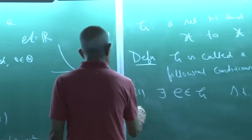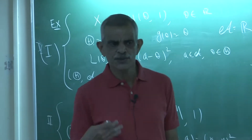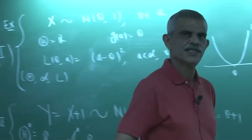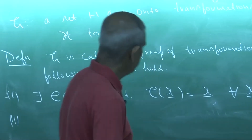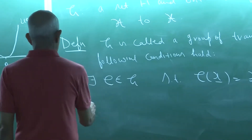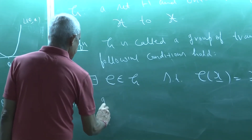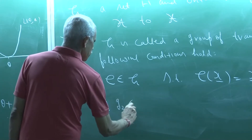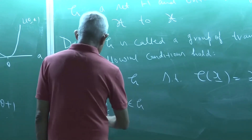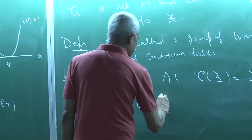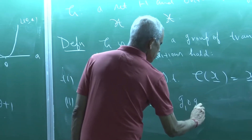The second condition is that G should be closed under composition. That means, if G₁ and G₂ are two transformations in G, then the composition of G₁ and G₂ should also be in G. So, if G₁ and G₂ belong to G, that should imply that G₁ ∘ G₂ also belongs to G.